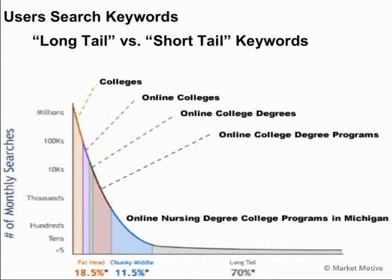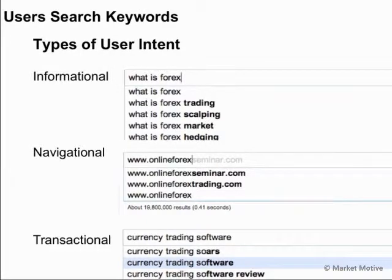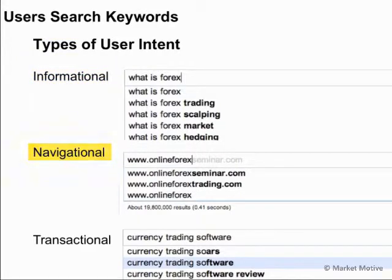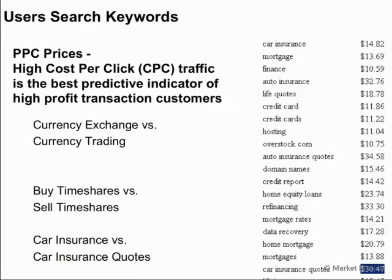User intent with long tail keywords is much more pronounced — you can see the user is looking for very specific information. There are other types of user intent we can segment and create strategy around. We can serve the appropriate content for informational queries starting with 'what is' or 'how things work,' navigational queries where users type in a URL, and transactional phrases like 'currency trading software demo' or 'currency trading software download' — examples of phrases that are going to convert into business, and that's what we're looking to do with our SEO strategies.